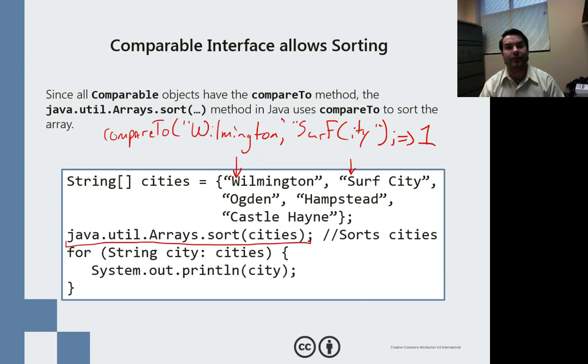at which point when I run through this print statement, what I will see is Castle Hayne, Hampstead, Ogden, Surf City, Wilmington. And that's what I can do.